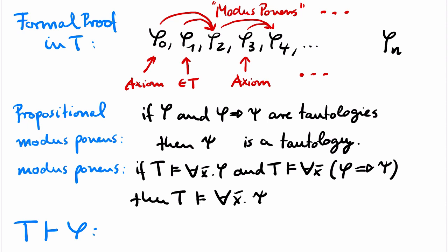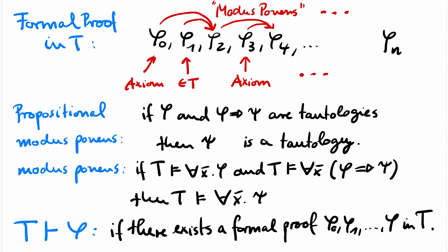We write T ⊢ φ and say that φ has a proof in T, if there exists a formal proof in T that ends with φ. All that remains for introducing my formal proof system is to specify what the logical axioms are that we can use in our formal proofs.